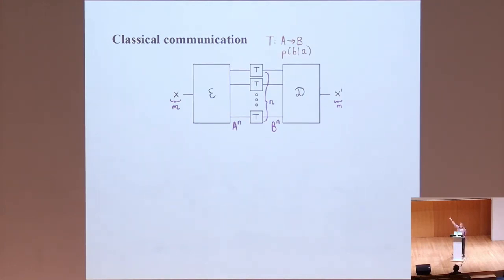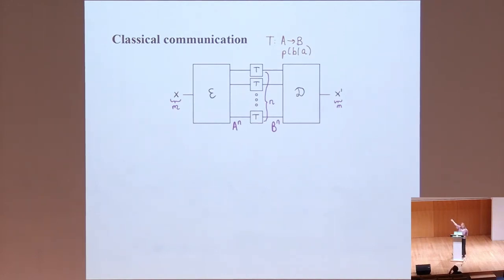So in this picture we have n copies of this channel T that corrupts your bit along the way. If I want to send maybe 0 and I send it n times, then it will arrive correct, hopefully most of the time if P is small. The decoder can do a majority vote to figure out what I wanted to send, and that way you can get great success probability. But on the other hand, what you are doing now is using your channel or your wire very many times.